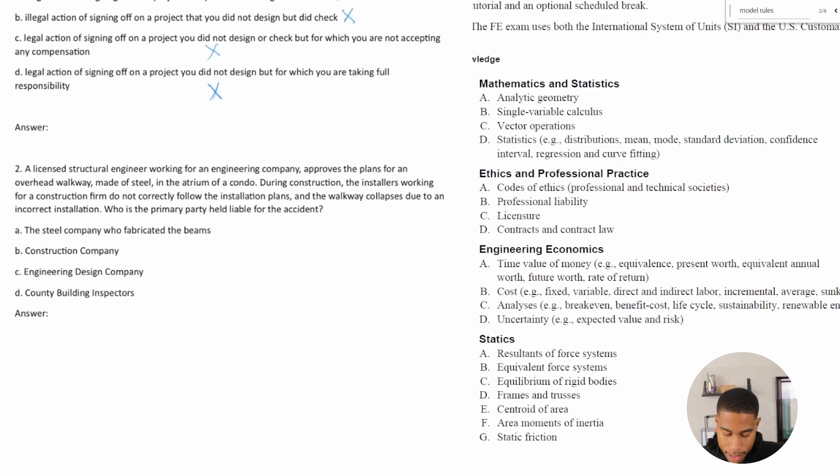Alright. Option A: the steel company who fabricated the beams. Not their problem. They made the steel, they sold it to an engineering company, construction company, and that steel is out of their hands. Option B: the construction company. No, not the construction company, and I'll tell you why after we go through all of them.